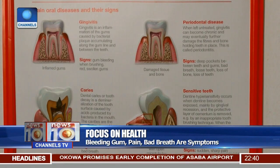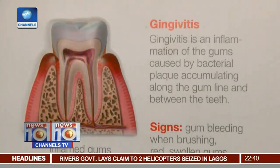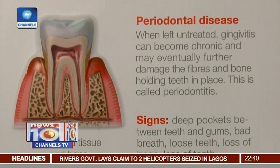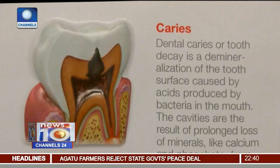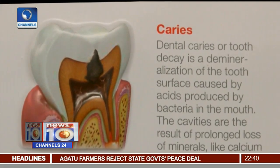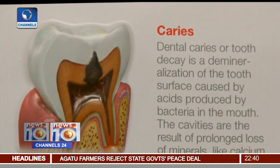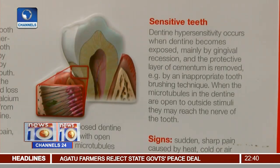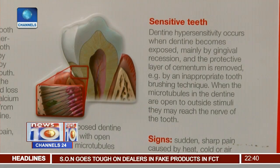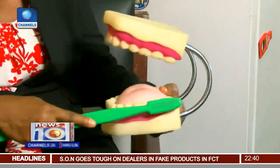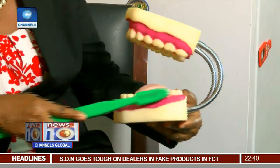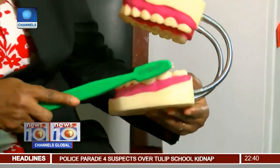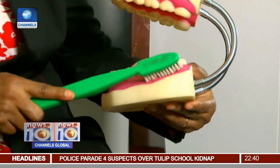The most common effects of these habits may manifest in different oral diseases, such as gingivitis, which is an inflammation of the gums, and if left untreated, it progresses to periodontal disease. Other complications are caries, or tooth decay, which is as a result of prolonged loss of mineral owing to acids produced by bacteria in the mouth, and sensitive teeth, which is a fallout of inappropriate brushing technique. Some people think it's the right way to go — that it's faster and gets the job done quickly — but if they keep doing this over the years, they are damaging their gums and their teeth.